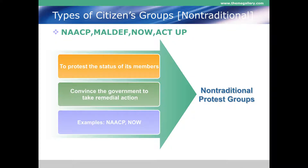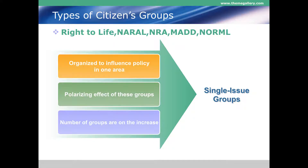Non-traditional protest groups protest the status of their members and try to convince the government to take remedial action. Good examples include the NAACP — the National Association for the Advancement of Colored Persons — the National Organization for Women, MALDEF — the Mexican American Legal Defense and Education Fund — and ACT UP. These groups work toward furthering the interests of their members, usually regarding how they're treated in society or by government.